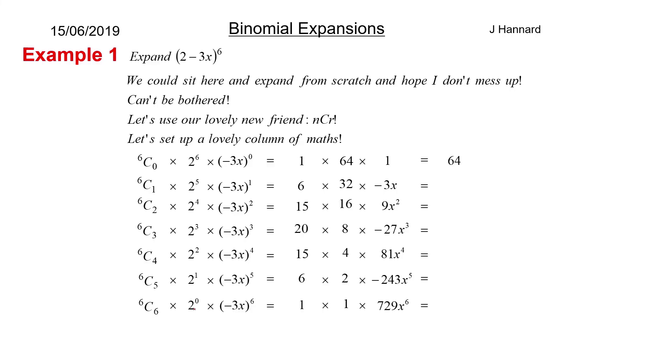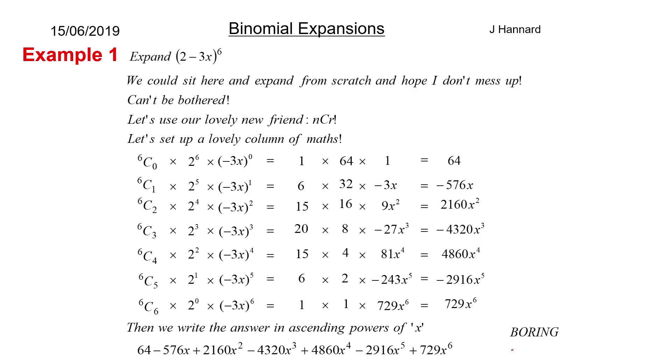And they all equal 64 minus 576x plus 2160x squared minus 4320x cubed plus 4860x to the 4 minus 2916x to the 5 plus 729x to the 6. Then we write it in ascending powers of x, so 64 comes first, and we write it like that. That is how you do a binomial expansion. It is incredibly boring to do, but they're all exactly the same.